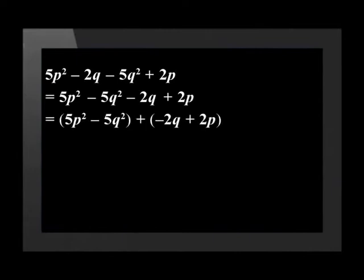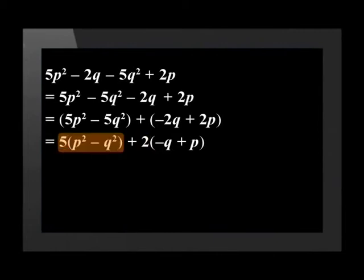Let's group it now, remembering to put a plus between the brackets. We can take out a common factor of 5 in the first bracket and 2 in the second. Let's look at the first term a little closer. There are 2 squared numbers separated by a minus, meaning we can do a difference of 2 squares.